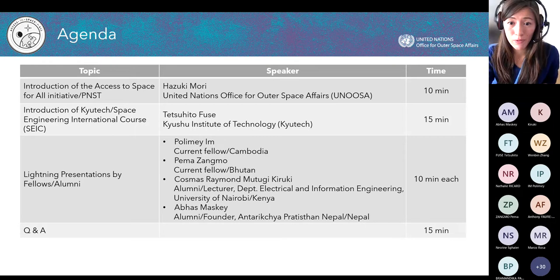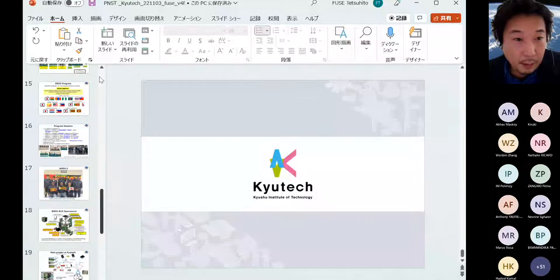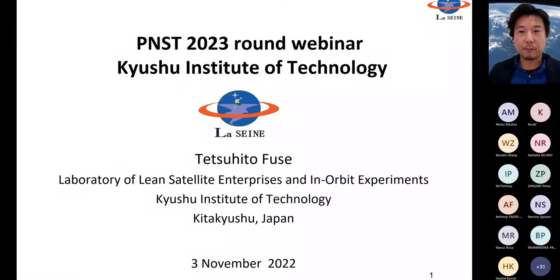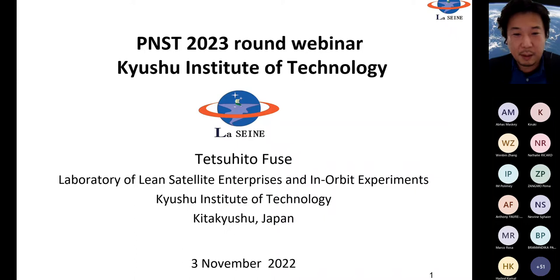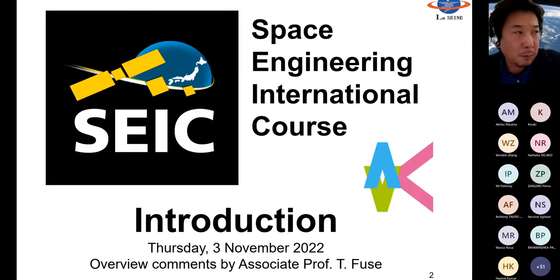Thank you, Mori Hazuki. My name is Tetsuhito Fuse. I belong to the laboratory of Satellite Enterprise and In-Orbit Experiments at Kyushu Institute of Technology. Today my talk is mainly focused on the Space Engineering International course. All of the students presenting today and the alumni belong to this international course. Kyushu is one of the main islands in Japan — the most southern of Japan's four big islands.